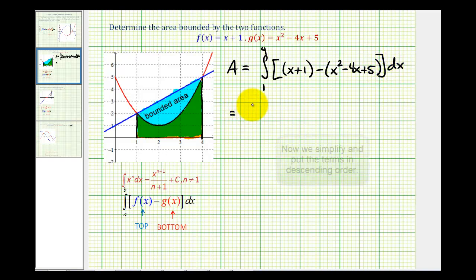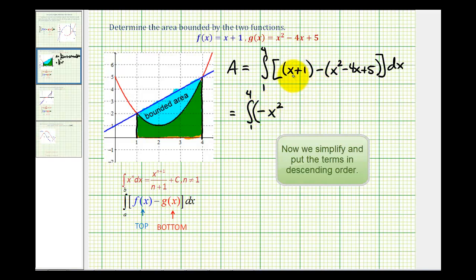So we'll have the definite integral from 1 to 4 of negative x squared, then we'll have x minus negative 4x, that's going to be plus 5x. Then we'll have 1 minus 5, so we'll have minus 4.